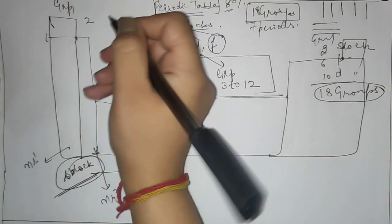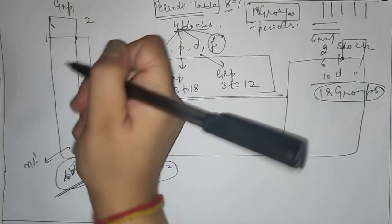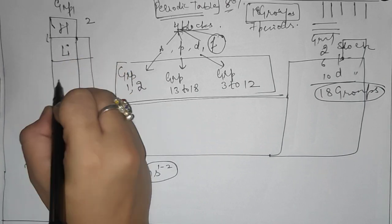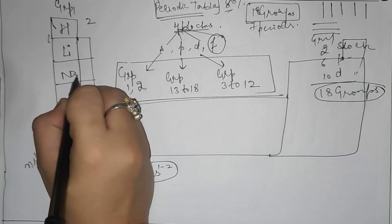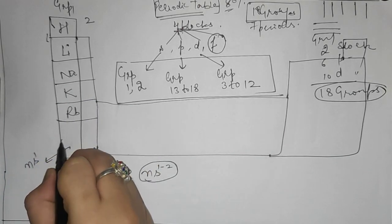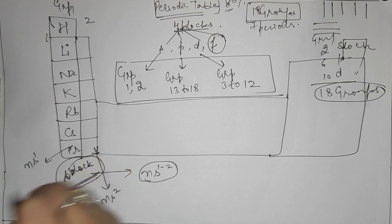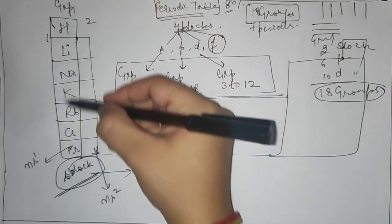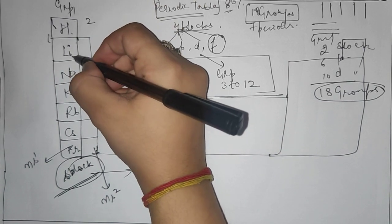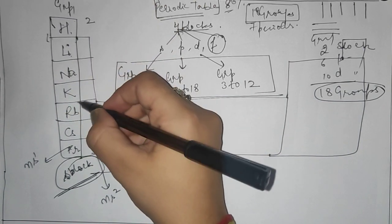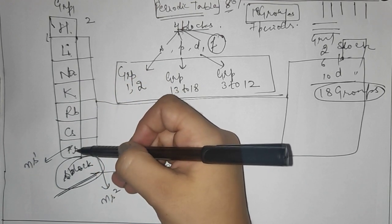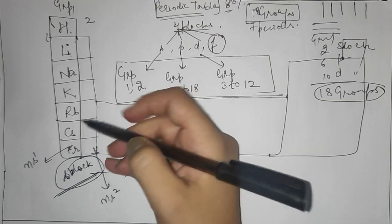Moving to group 1, the elements are: hydrogen (H), lithium (Li), sodium (Na), potassium (K), rubidium (Rb), cesium (Cs), and francium (Fr).